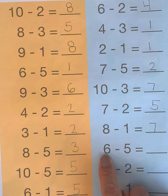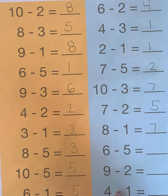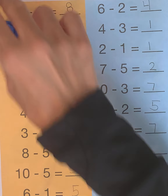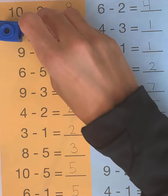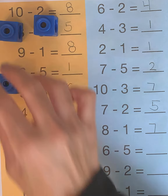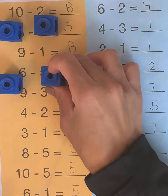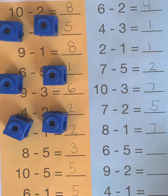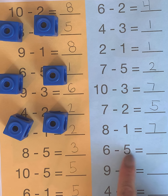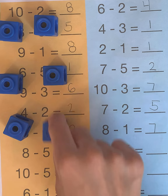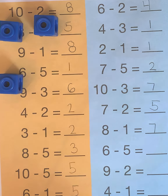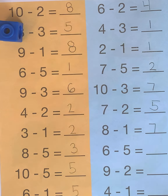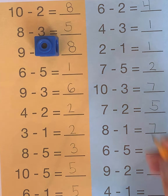We have 6 minus 5. So let's start with 6: 1, 2, 3, 4, 5, 6. And we are taking 5 away: 1, 2, 3, 4, 5. We are left with just 1 cube.